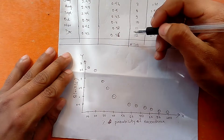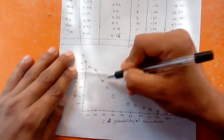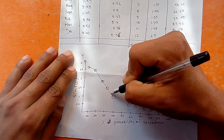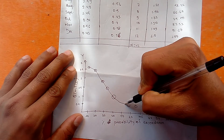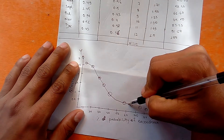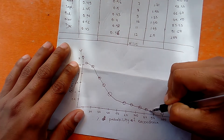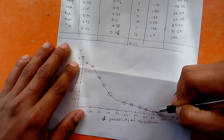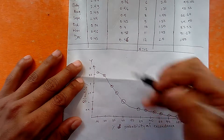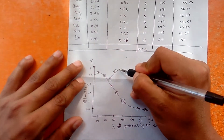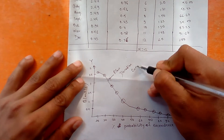Now draw a smooth curve joining all the plotted points. Make your hand very light while drawing — do not make sharp curves, since a sharp curve does not represent the flow duration curve properly. Join all points smoothly. This is the flow duration curve.